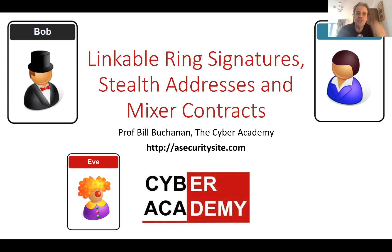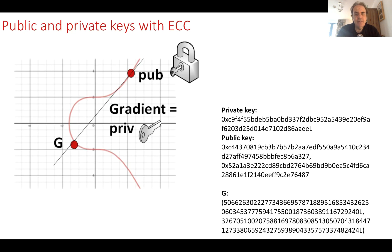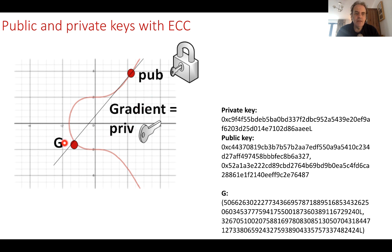Let's look at linkable ring signatures, stealth addresses, and mixer contracts. This is how elliptic curve works — it's used in lots of applications such as Tor, Wi-Fi, and within blockchain. We create a point on an elliptic curve well known to everyone, then generate a 256-bit random number that becomes the gradient from that point until we meet the elliptic curve again to define the public key. The public key P equals the private key multiplied by G. The private key is a scalar of 256 bits; the public key is an XY coordinate of 512 bits.